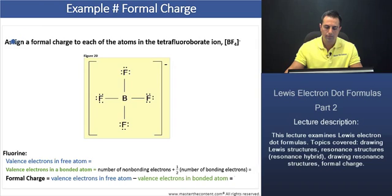Example formal charge. Assign a formal charge to each of the atoms in the tetrafluoroborate ion. We're given the formula as well as its connectivity here in figure 20. We'll begin with fluorine. We'll find formal charge for fluorine and then subsequently for the boron atom. For fluorine, let's first find the number of valence electrons in a free fluorine atom. We know that fluorine is a main group seven element. Thus, a neutral fluorine atom is going to have seven valence electrons, as you see here.